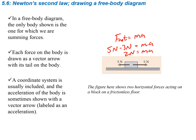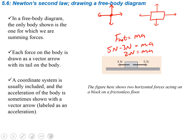In a free body diagram, the only body shown is the one for which you're summing the forces. In a problem with a pulley system and multiple weights, you focus on just one specific object at a time and draw its free body diagram. Sometimes we use a dot instead of a box to represent the object — either is fine — and then draw the force vectors always pointing away from the body.